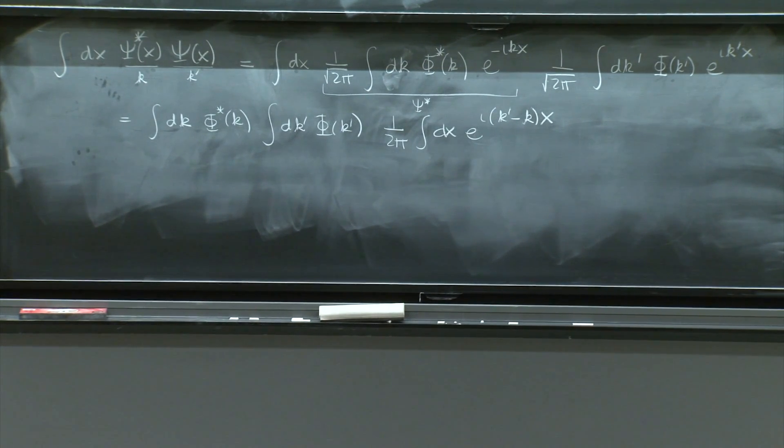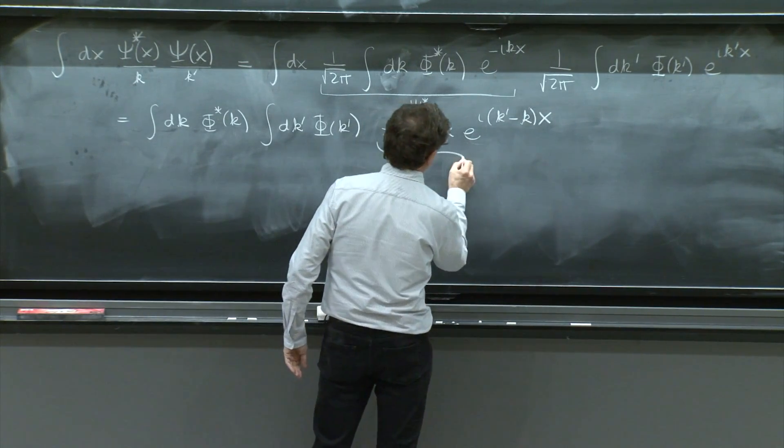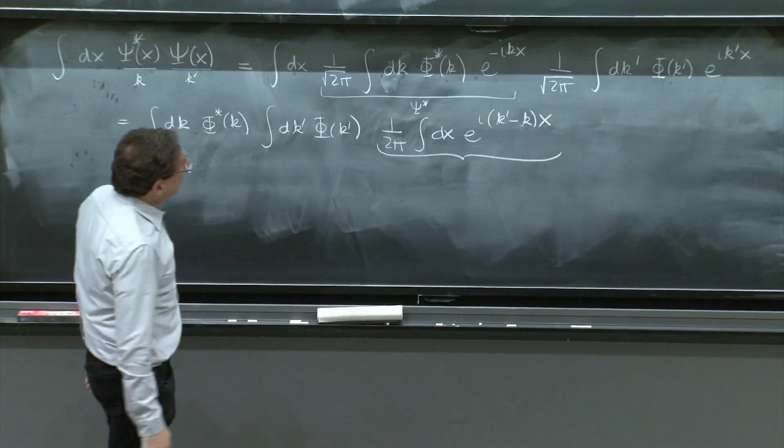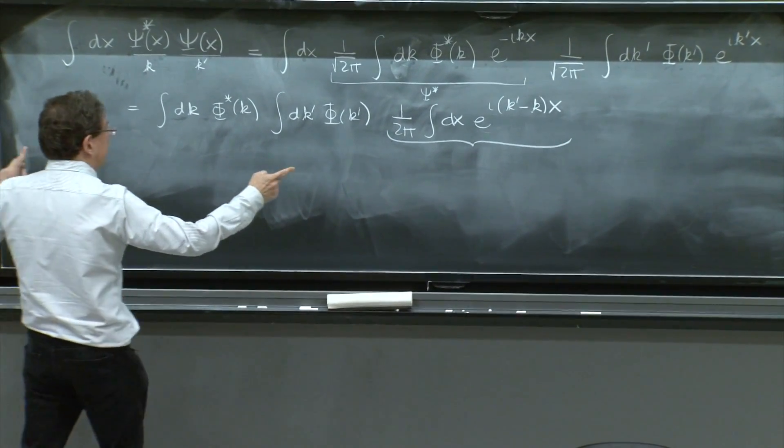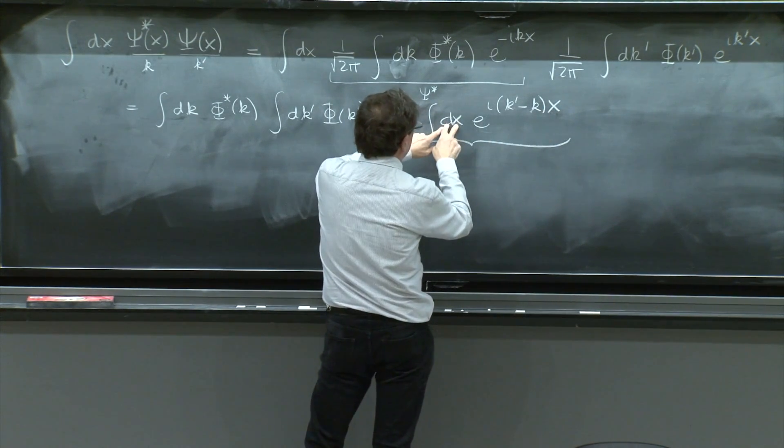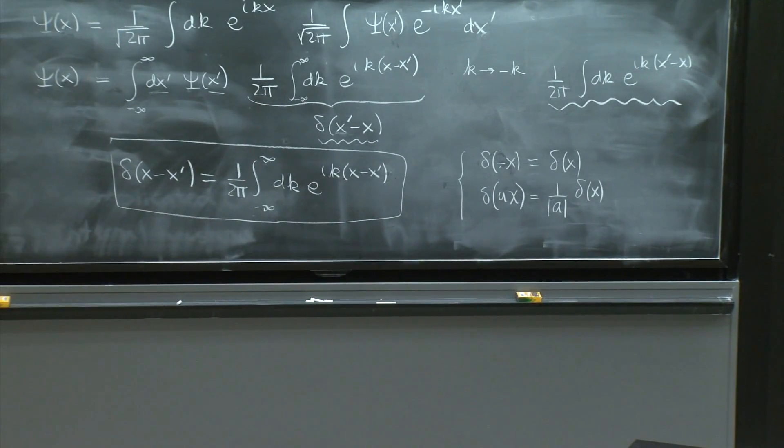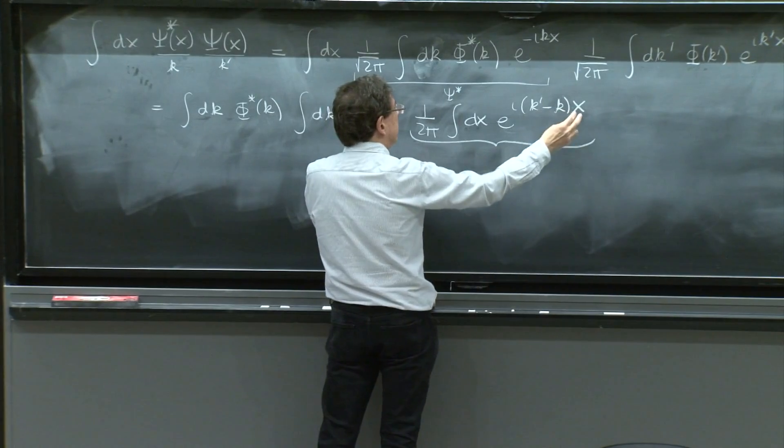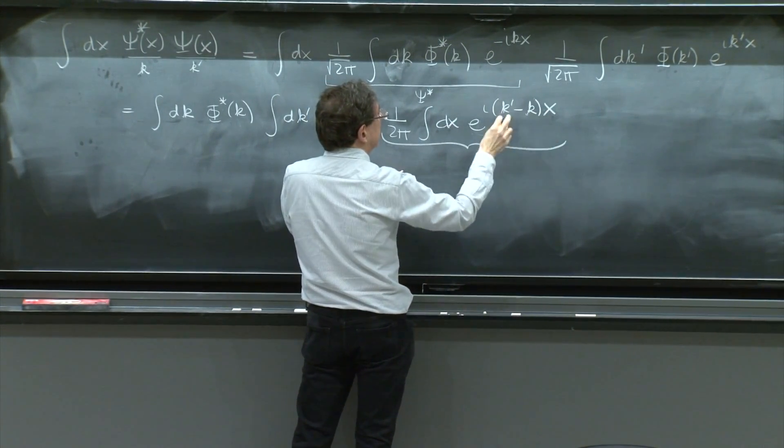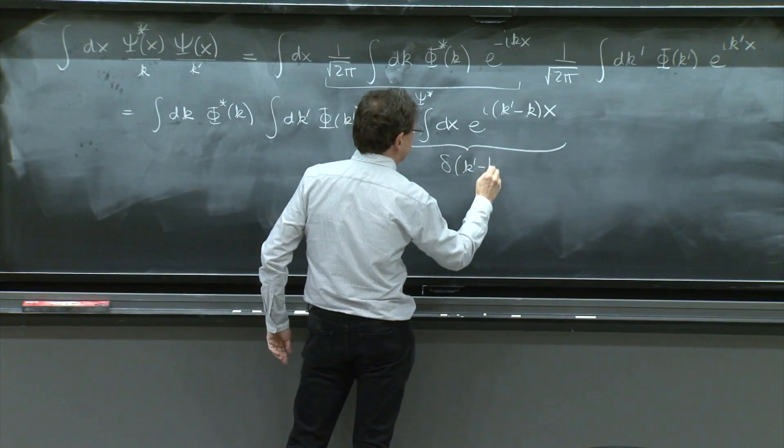And now comes to help this integral representation of the delta function. And it's a little opposite between the role of k and x. Here, the integration variable is over x. There, it was over k. But the spirit of the equality or the representation is valid. You have the 1 over 2 pi, a full integral over a variable, and some quantity here. And this is delta of k prime minus k.